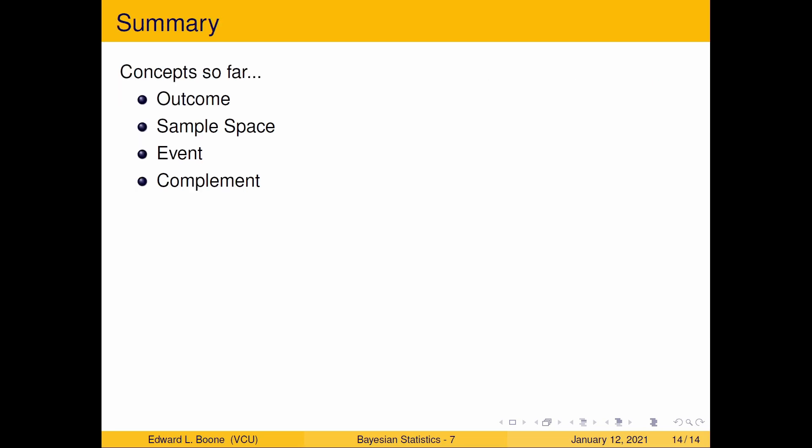So what have we learned so far? We've learned what an outcome is, what a sample space is, what an event is, and what a complement is. This is the language we're building so that we can talk about probability and uncertainty in a way that's useful for Bayesian statistics. We're going to move on to the next video — see you there.